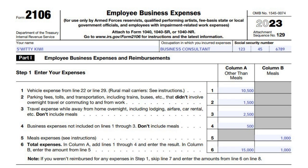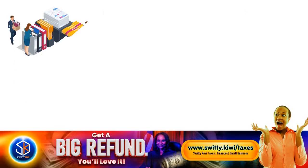Line four covers business expenses not included on lines one through three — do not include meals there. Line five is where you put meal expenses, and there are some specific instructions around meals. Line six is total expenses. Make sure you specify things where you have proper documentation to substantiate whatever you claim here.